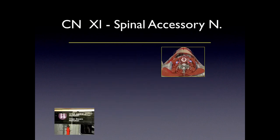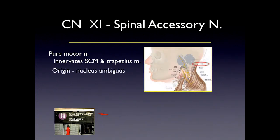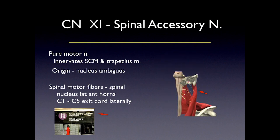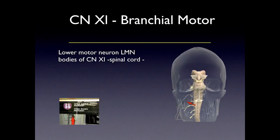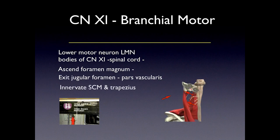Cranial nerve 11, the spinal accessory nerve, is straightforward — it has purely motor innervation to the sternocleidomastoid and trapezius muscles. The origin is from the nucleus ambiguus and spinal motor fibers from the anterior horns of C1 through C5, exiting the cord. These lower motor neurons then ascend back through the foramen magnum and exit the jugular foramen with the pars vascularis along with cranial nerve 10. Remember: pars nervosa is for CN9, and CN10 and CN11 go in the larger pars vascularis.